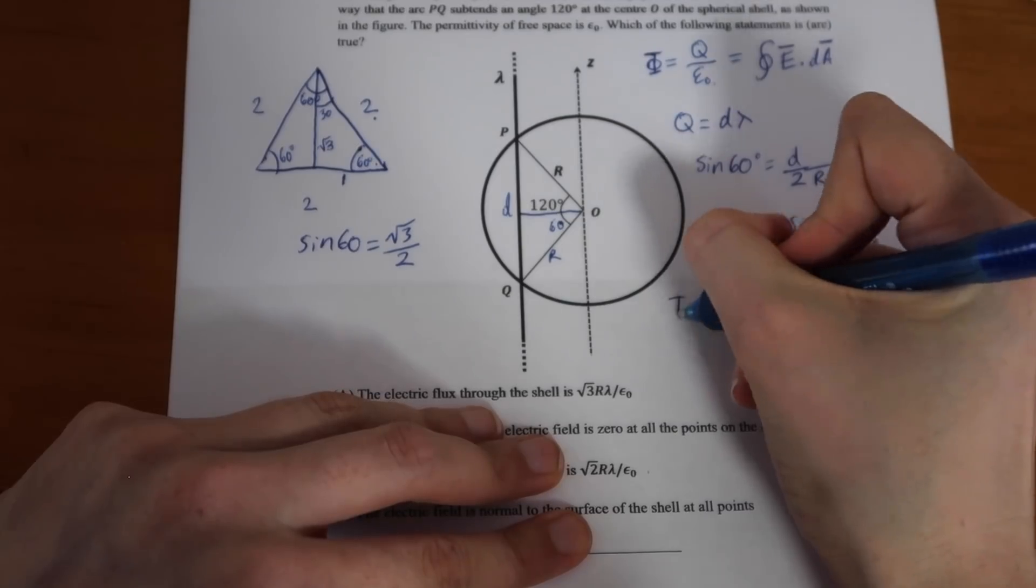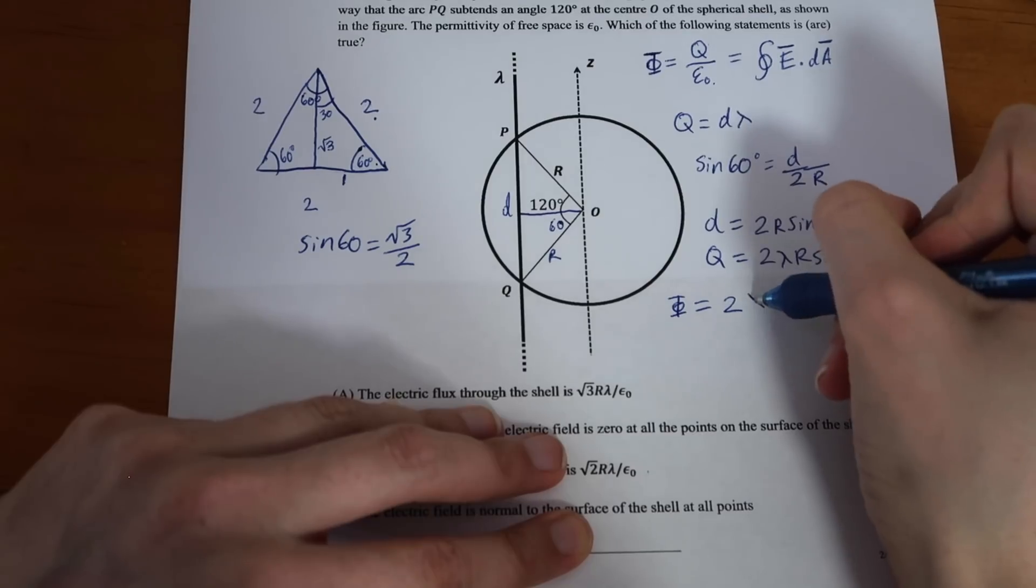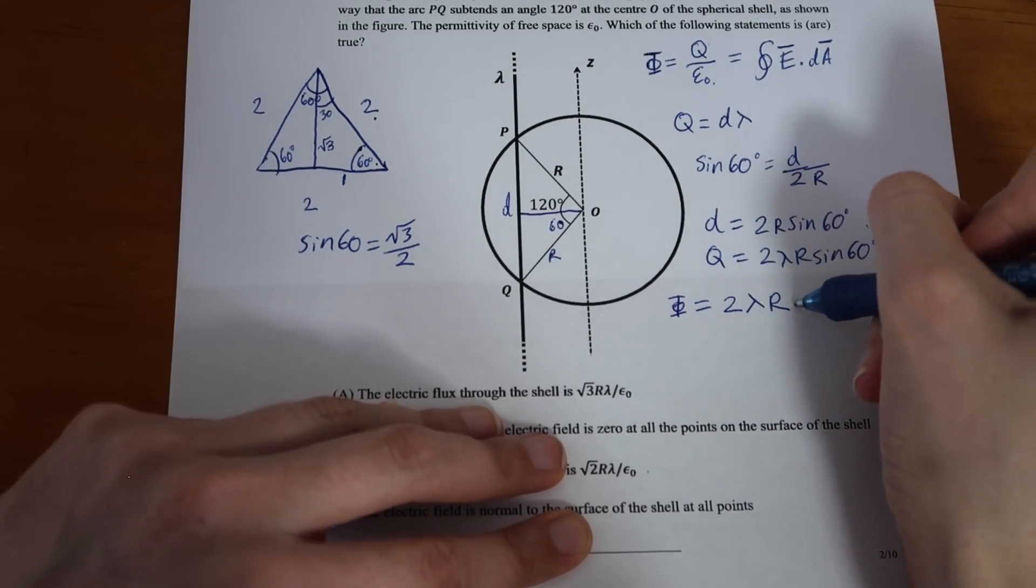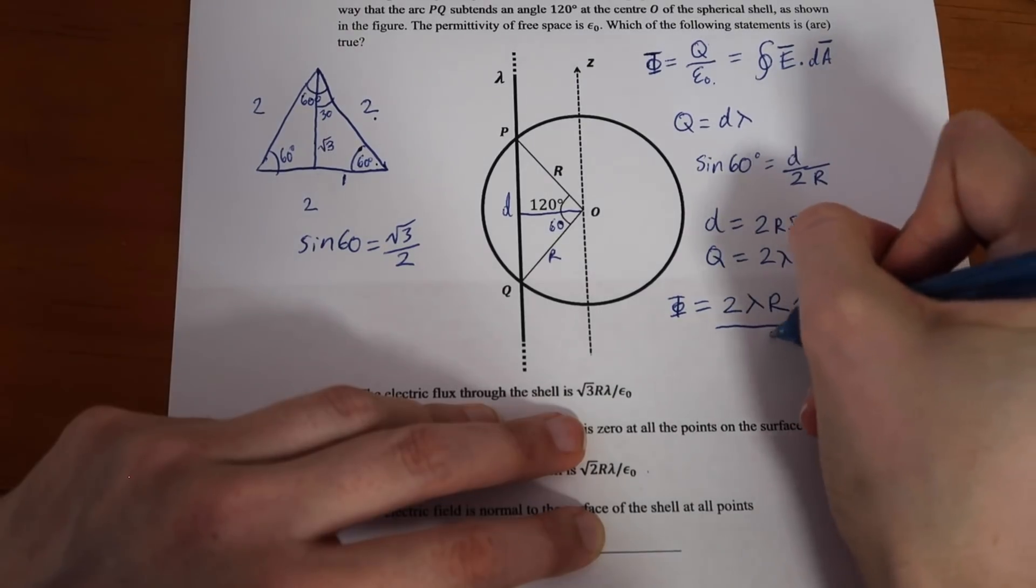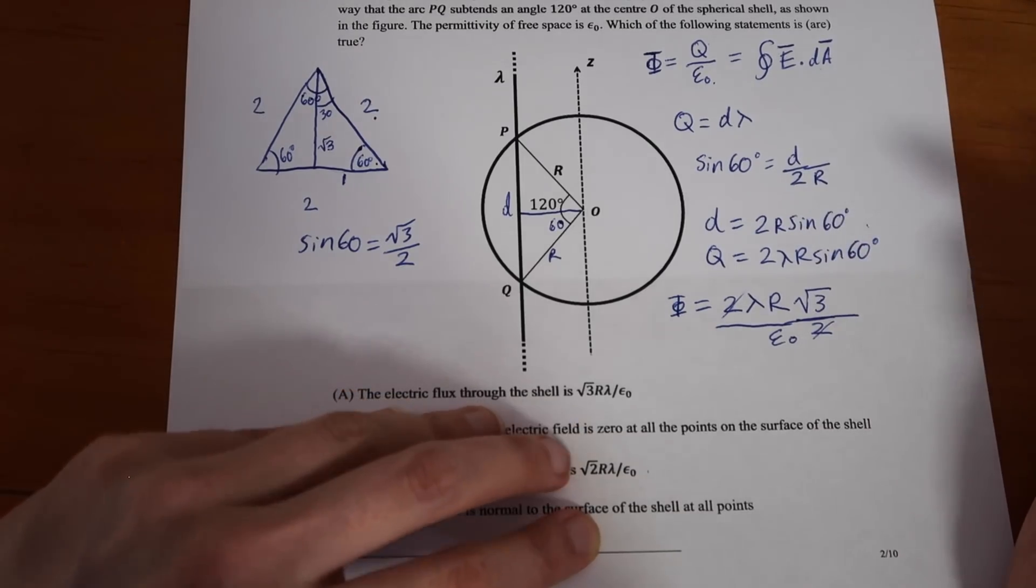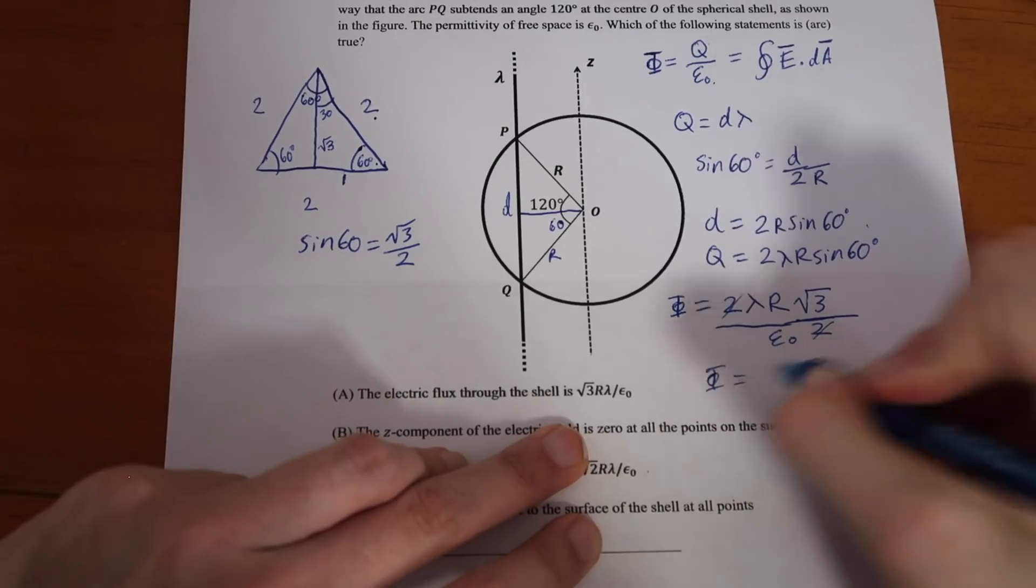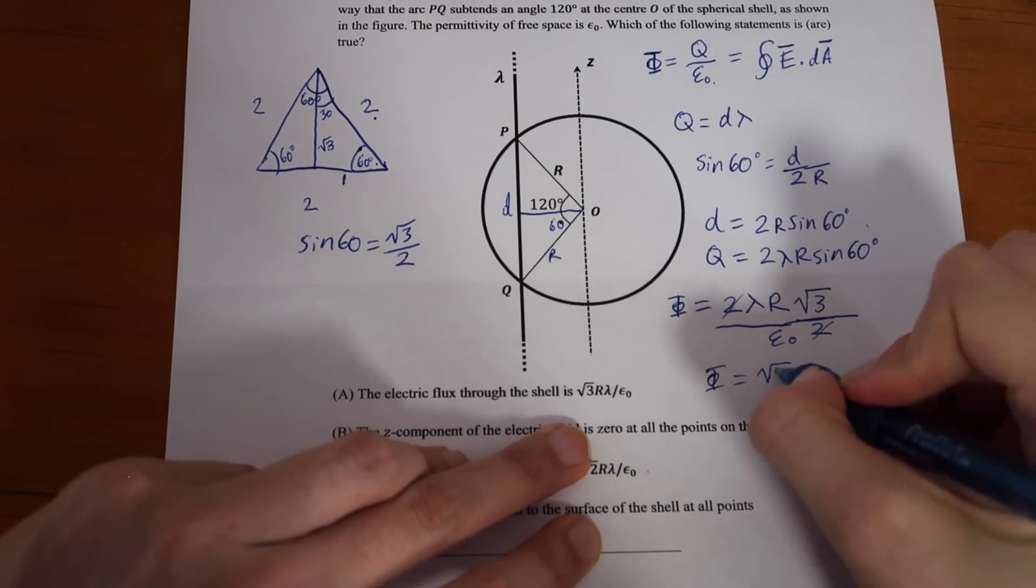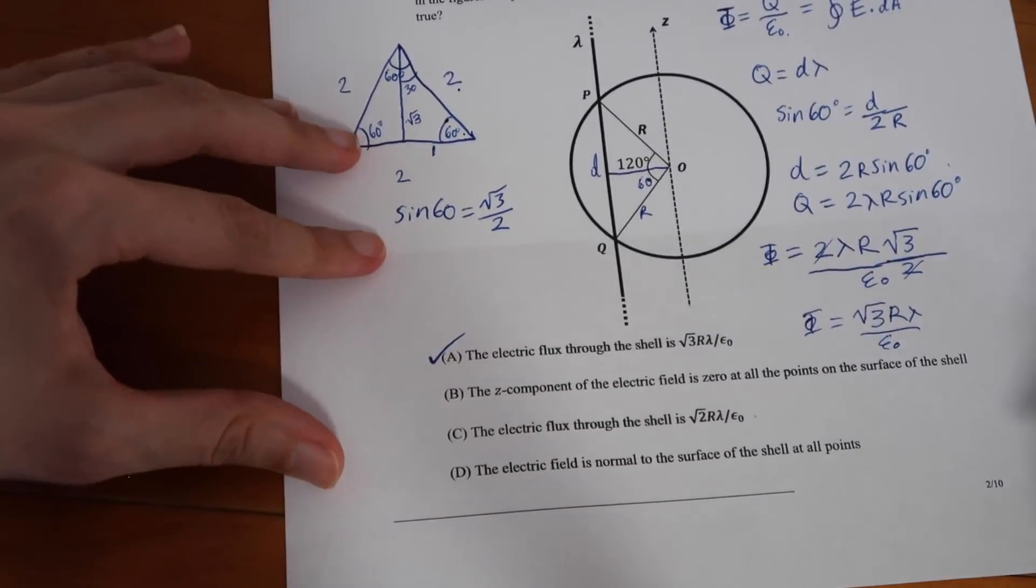So, let's go back over and write out our flux. It is going to be 2 lambda r times sine of 60, which is this, all of that divided by epsilon naught. All right, so we do that. Our twos cancel. And, what we end up with is exactly this amount. We get our flux is square root of 3 r lambda over the permittivity. All right, so part A is a correct answer here.